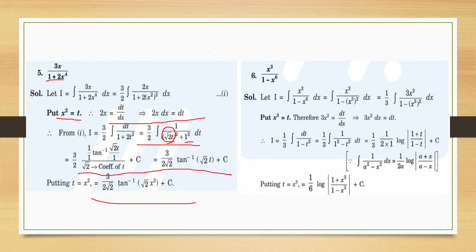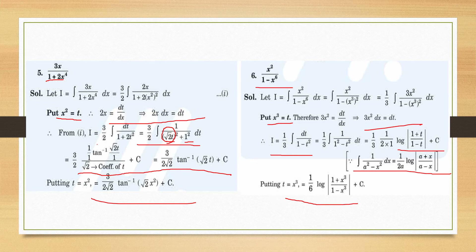Question 6: put x³ = t, so the integral changes to (1/3) dt/(1 − t²). This is the form 1/(a² − x²) with a = 1. Using the formula (1/2a) log|a + x / a − x|, and with a = 1, it becomes (1/6) log|(1 + t)/(1 − t)| + C = (1/6) log|(1 + x³)/(1 − x³)| + C.